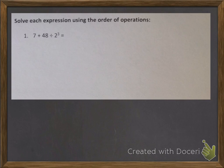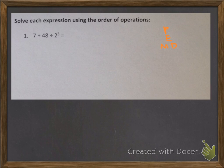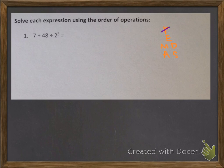Let's try this out. We have 7 plus 48 divided by 2 cubed, or 2 to the 3rd power. Before we try solving anything, the best thing to do is to write our little PEMDAS in the hopscotch form off to the side, and then refer back to it again and again as we go through the problem. I'm looking for parentheses and brackets first. I don't see any, so I can cross off the P. Moving on to E for exponents — I do see an exponent right here: 2 to the 3rd power.